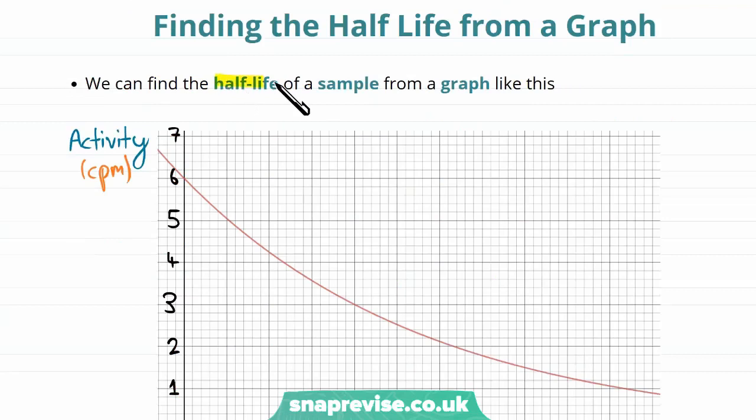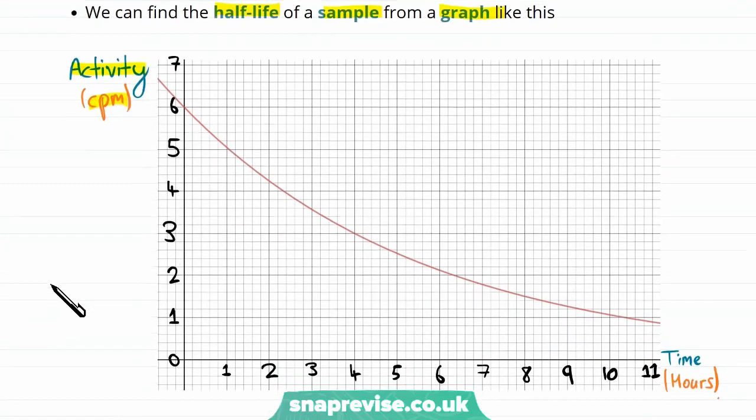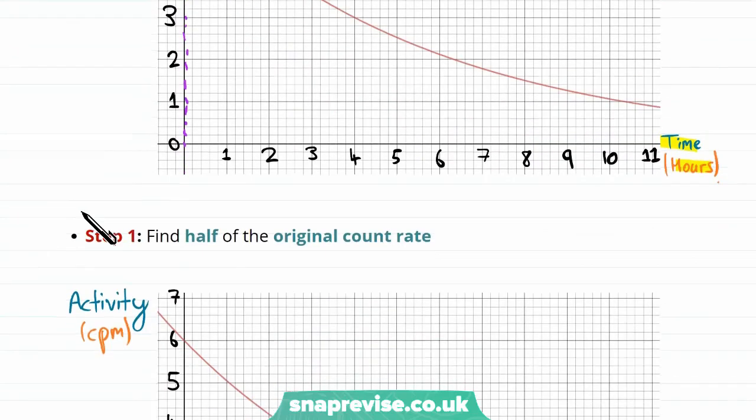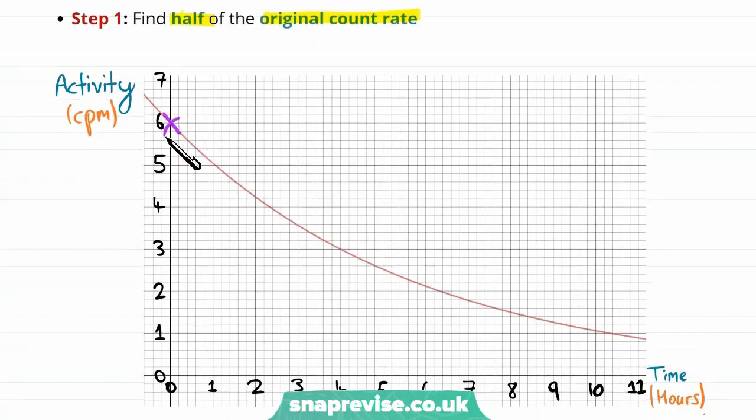Let's talk about how we can find the half-life of a sample from a graph such as the one below. So in this graph we have the activity measured in counts per minute, and it's being plotted against the time in hours. And one thing we notice straight away looking at this graph is that at time equals zero, that is at the start, we find that the initial activity was six counts per minute. So we have a graph which shows how the activity of our sample changes over time. But how are we going to use this graph to try and find the half-life? Well our first step is going to be to find half of the original count rate. Well our original count rate was six and half of that is three.